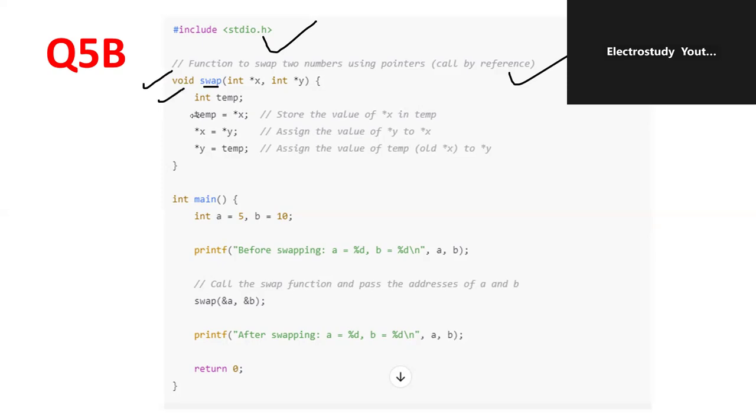Then, declare the variable. Then, create temporary functions in this particular fashion. Now, like you can declare the variables a and b. Then, print before swapping what will be the result. Then, afterwards, print after the swapping what could be the result. Then, return zero.